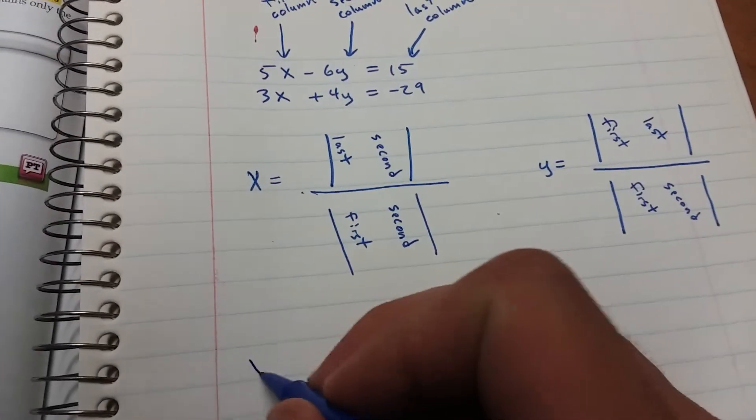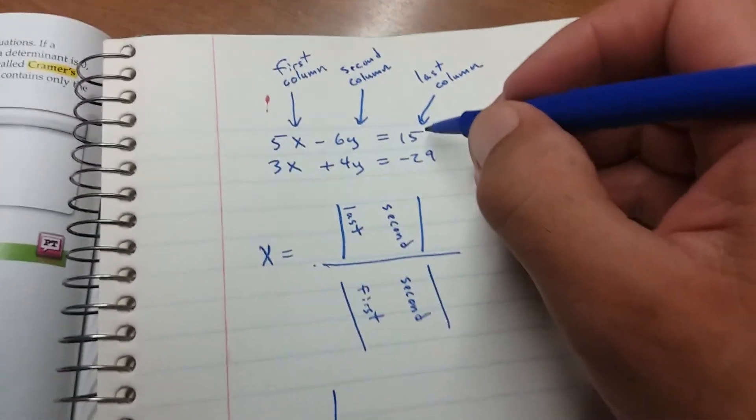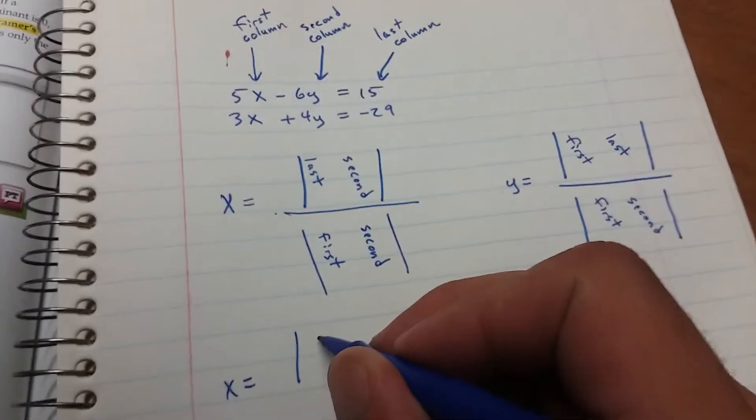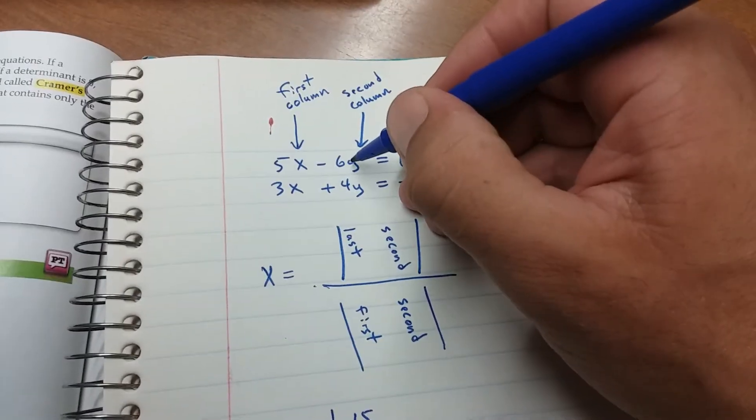So x, I think my way is a little shorter and easier to understand. So you got the last column, which is 15 and negative 29. And then your second column, negative 6 and 4.